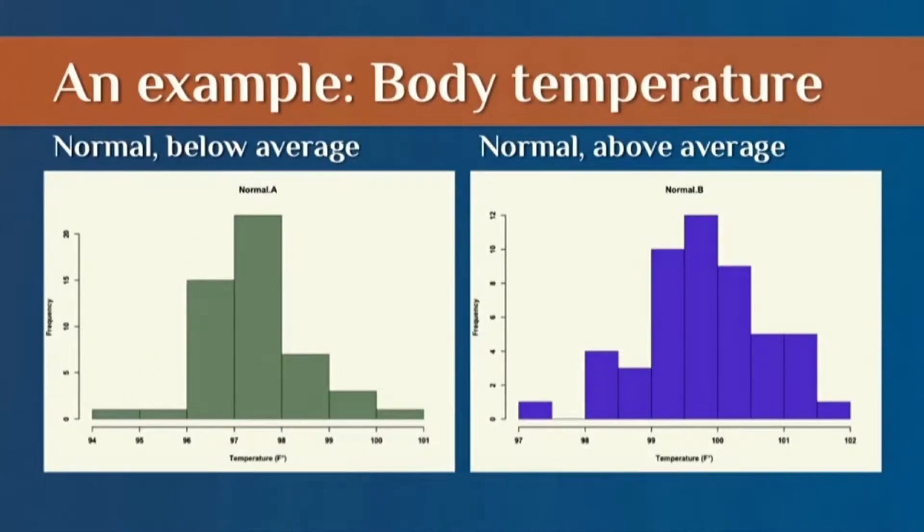And here, again, we've got a pretty normal, not perfectly normal, but pretty normal distribution. And this group is a little bit above average. So we've got, the average looks like it's approaching 100. So this is the group of children who are still sick. They haven't had the antibiotics yet.